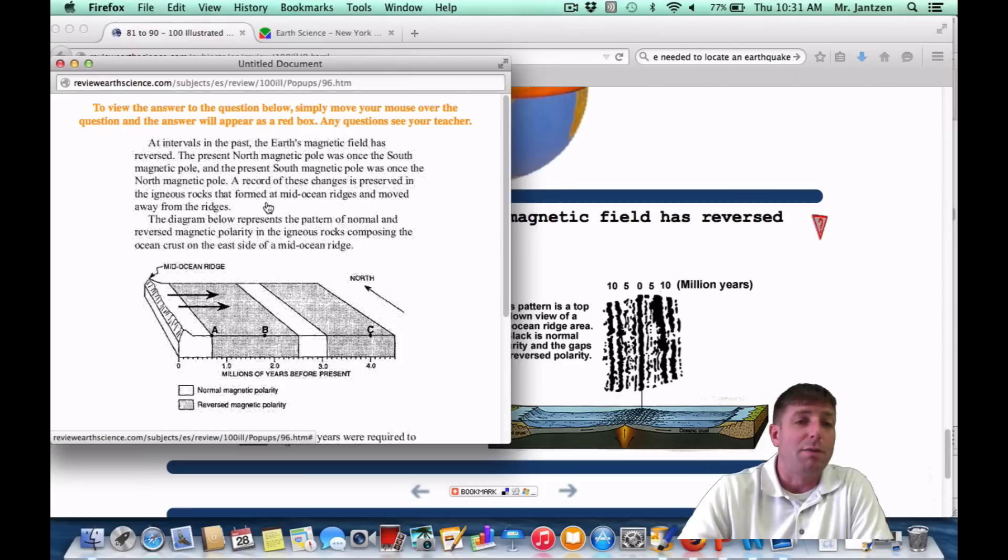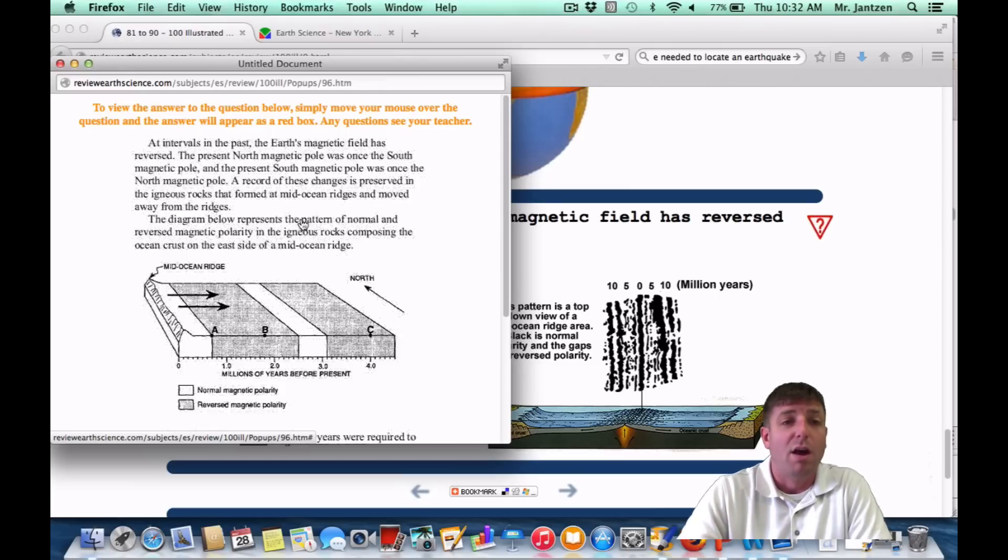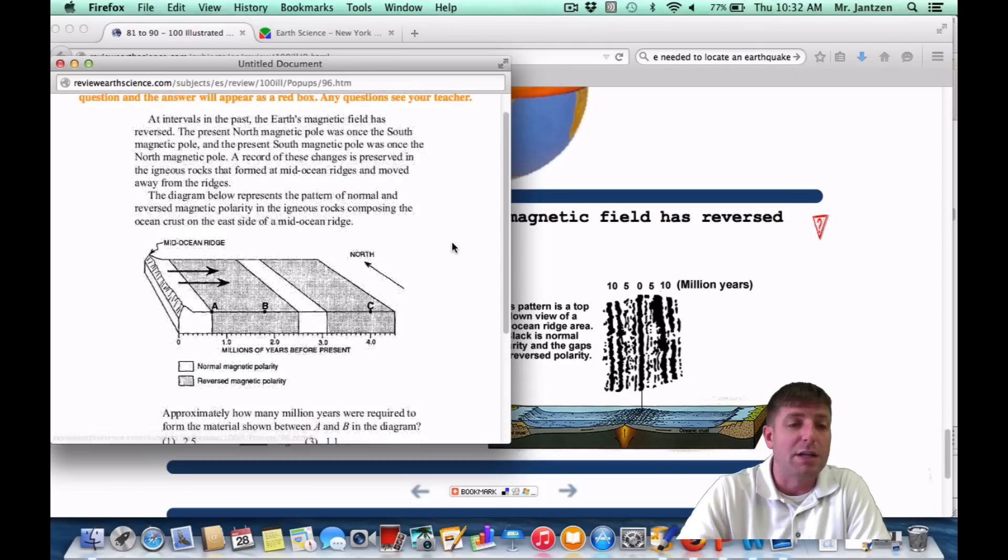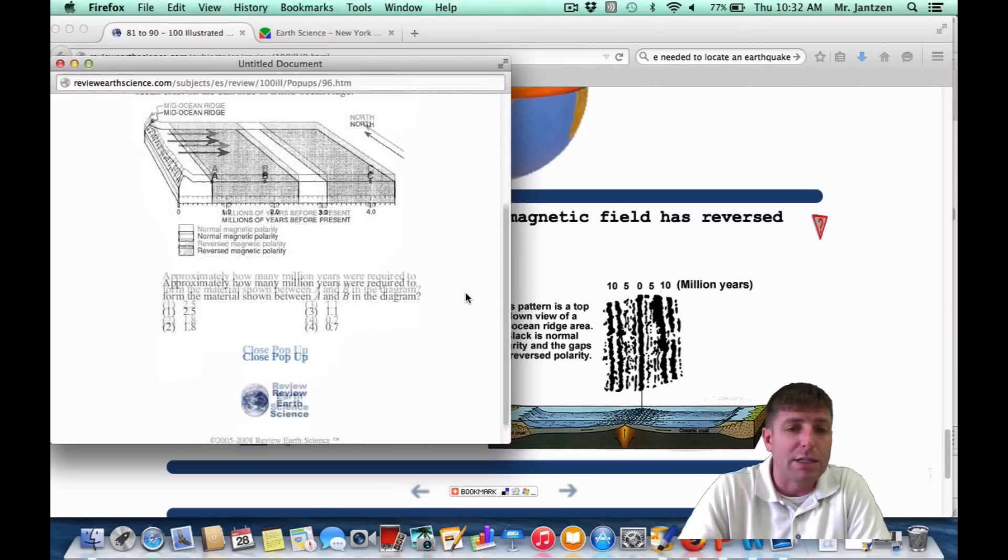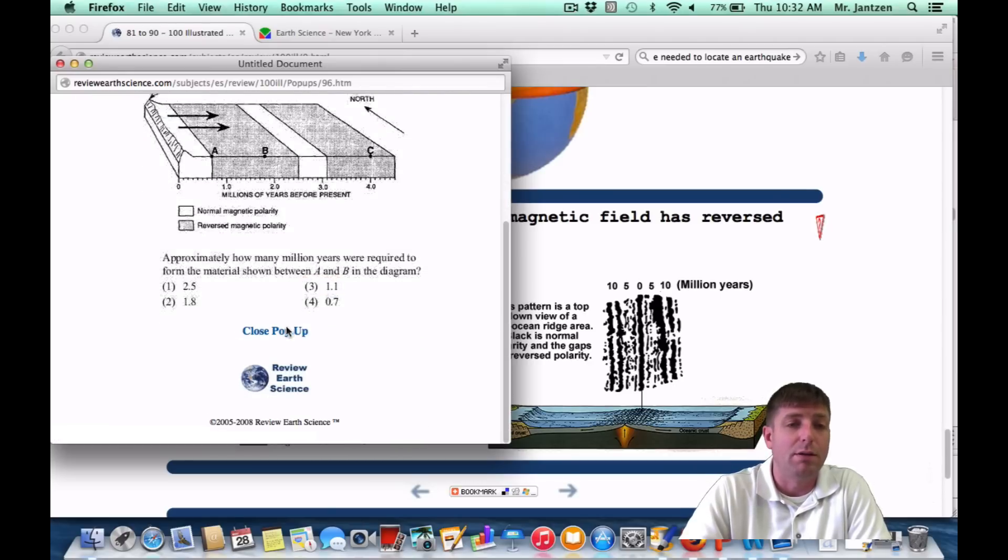As a regents question, it may appear something like this: at intervals in the past, the U.S. magnetic field has reversed. The diagram below represents the pattern of normal and reversed magnetic polarity in the igneous rocks composing the oceanic crust on the east side of the mid-ocean ridge. They want to know approximately how many million years were required to form the materials shown between A and B in the diagram. So here's A, here's B. How long did this take? Well, from here to here is like one. You can do this two ways. You can get a piece of scrap paper, measure from A to B, bring that scrap paper down and see how far along it is. Or you can kind of subtract where A is from B is. So B looks like 1.8 and A looks like 0.7. So 1.8 minus 0.7 is going to be approximately 1.1 or choice 3. That's number 90.